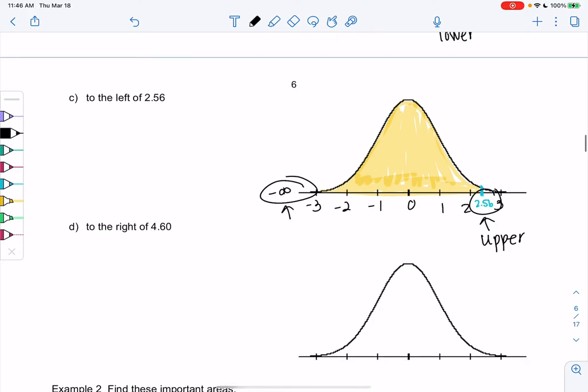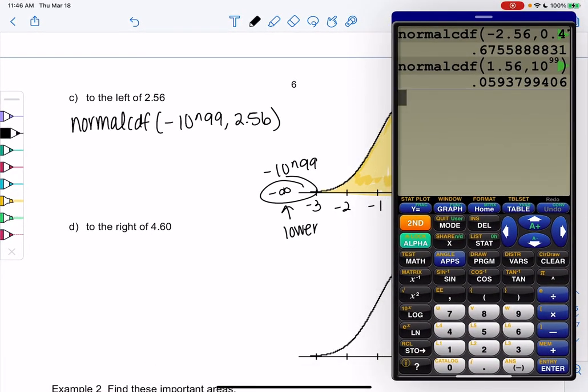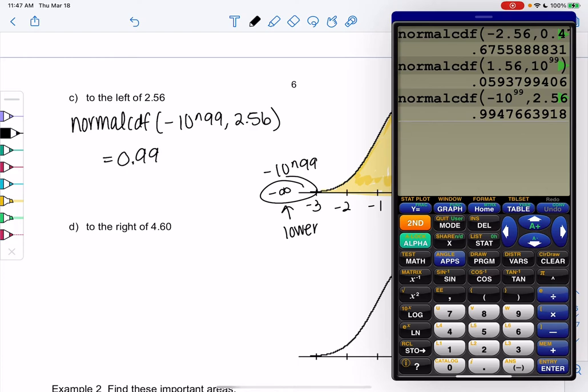And we'll use negative 10 to the 99. Alright, the left side is a negative. So we'll do normal cdf again. Our lower will be negative 10 to the 99. And our upper will be 2.56. Make sure you hit the negative sign and not the subtraction sign. Common error. And you get 0.9948, which is almost 1, like we said. Alright, it's close to 1 because it's almost the whole curve.